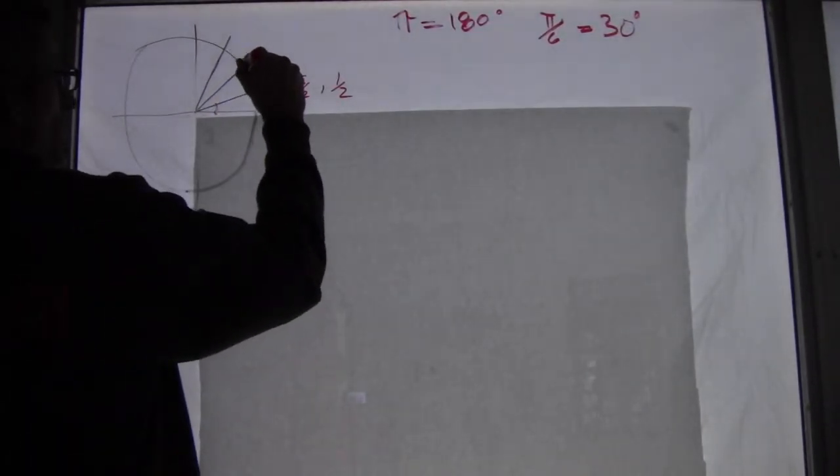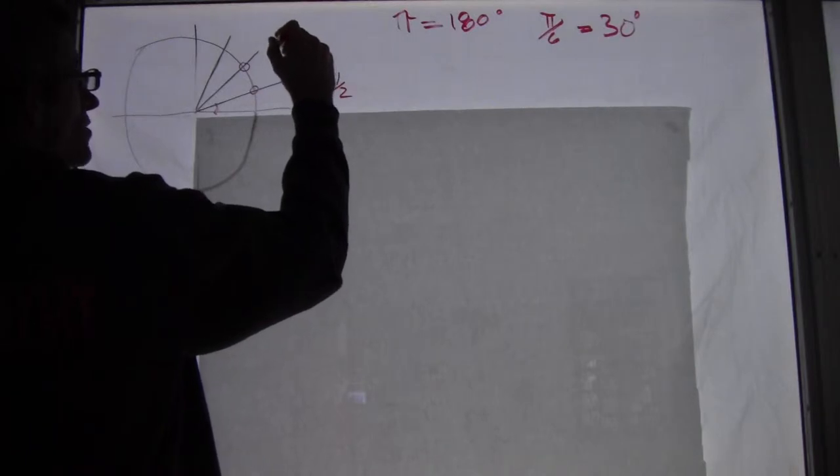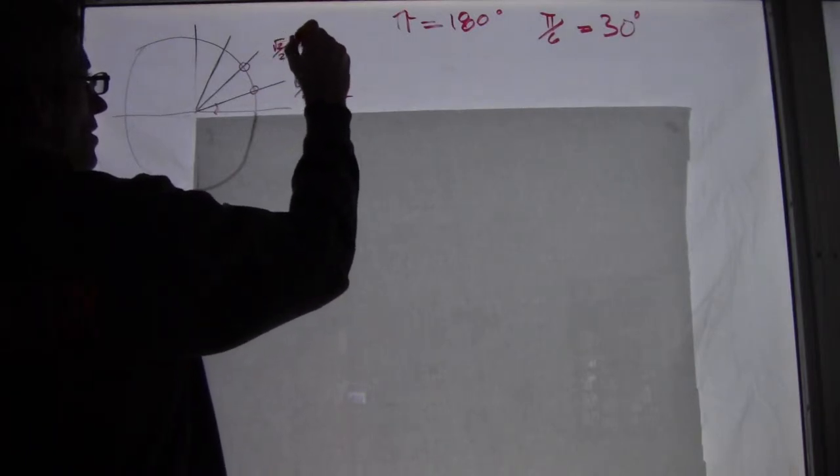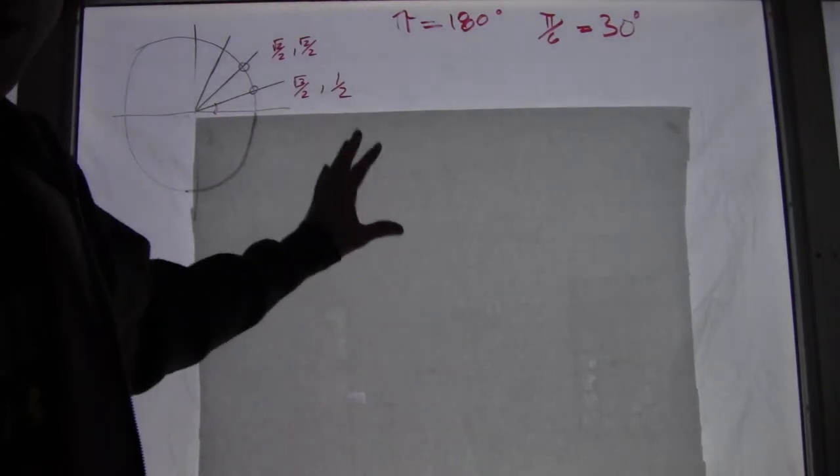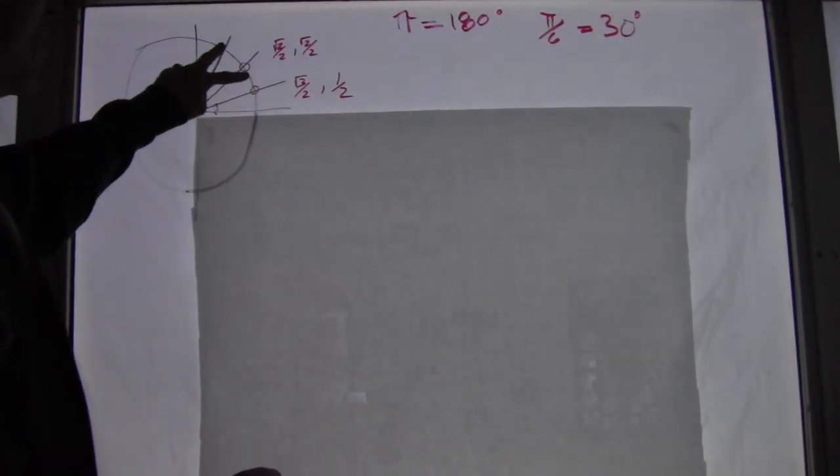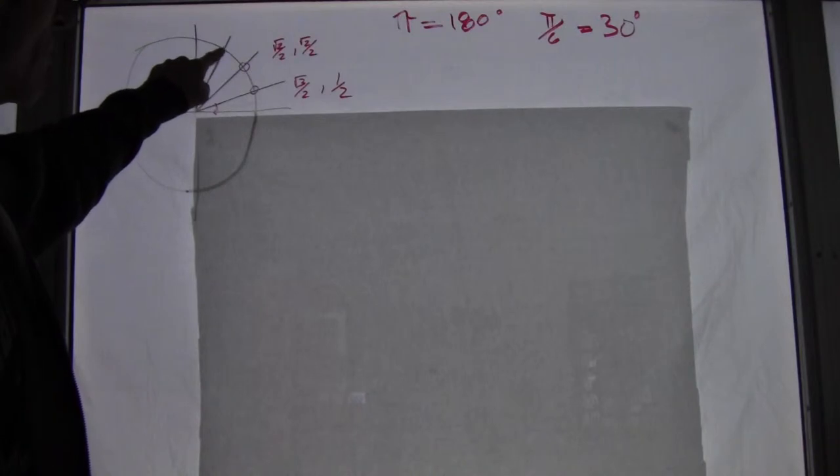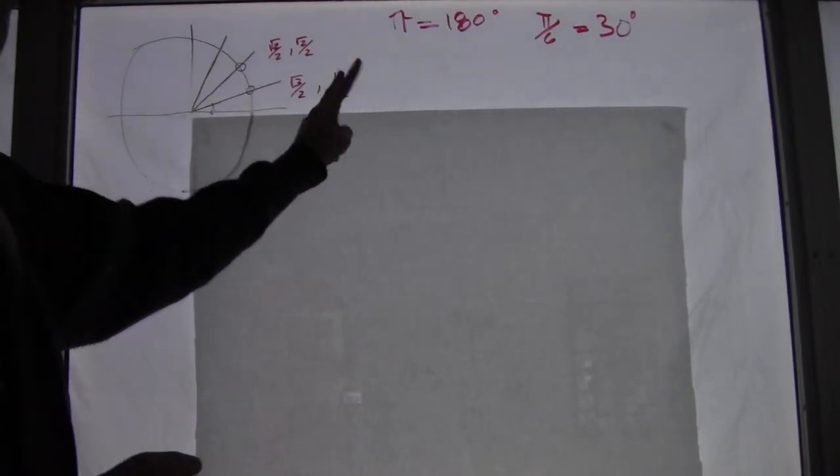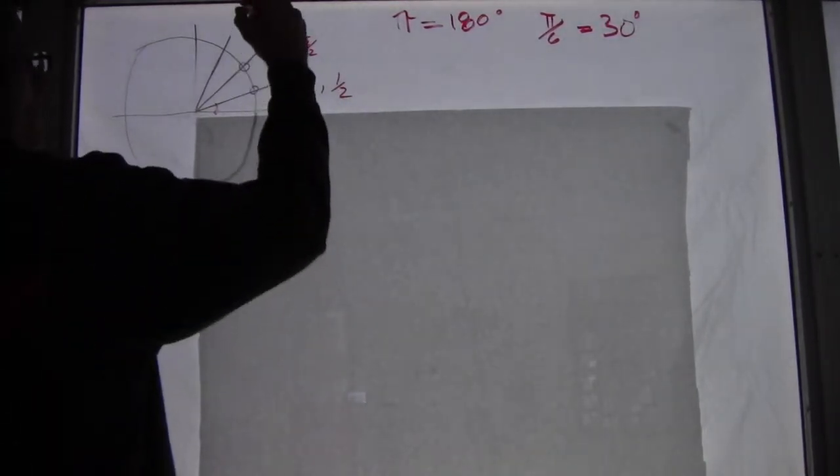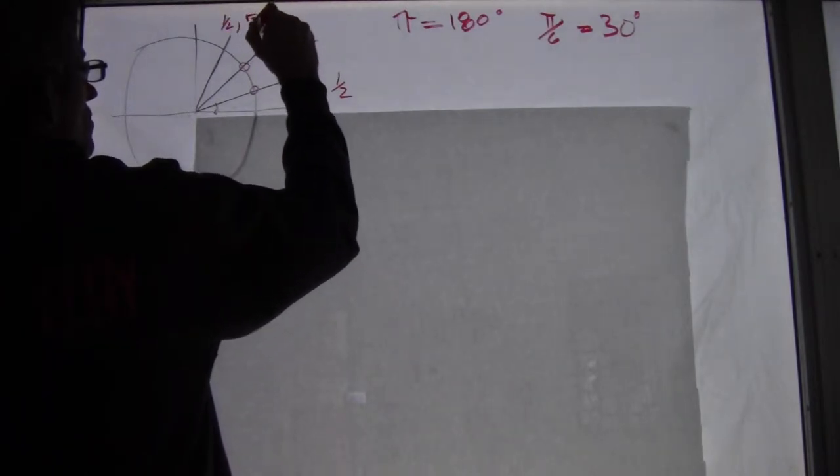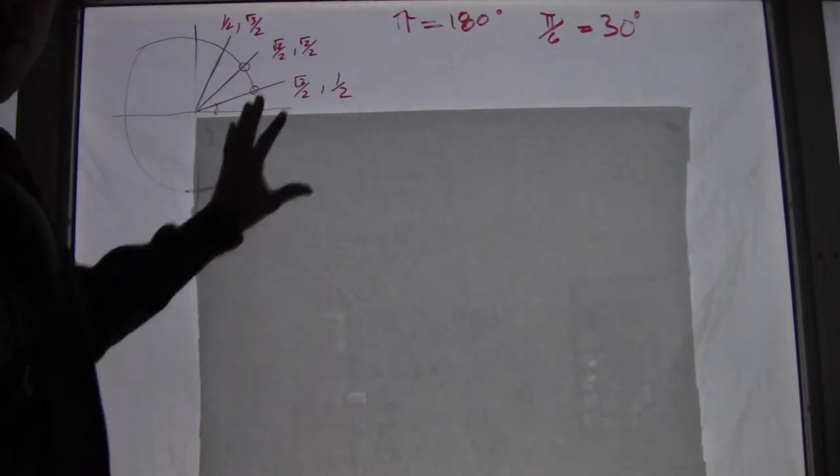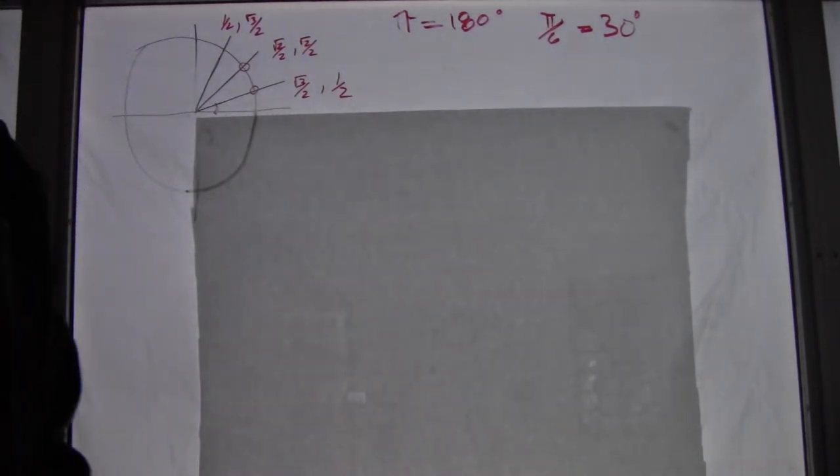Now this guy here is a 45 degree one, that's square root of 2 over 2, square root of 2 over 2, so they match. And then if you can remember those two, then you can remember that the 60 degree angle, this guy here, is just these two coordinates flipped. So it's going to be 1 half for the x value, square root of 3 over 2. So this is your reference, and using that we can solve all these different problems.